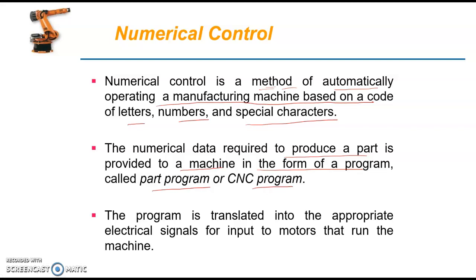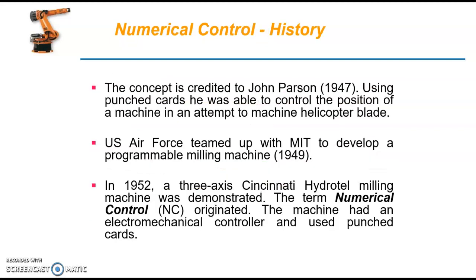The program is translated into appropriate electric signals for input to motors that run the machine. The concept was first introduced in 1947. In 1949, the US Air Force teamed up with MIT, Massachusetts Institute of Technology, to develop a programmable milling machine. In 1952, Cincinnati succeeded in demonstrating a milling machine working on this kind of control system operation. The term numerical control originated from there, so the origination of numerical control is marked as 1952.